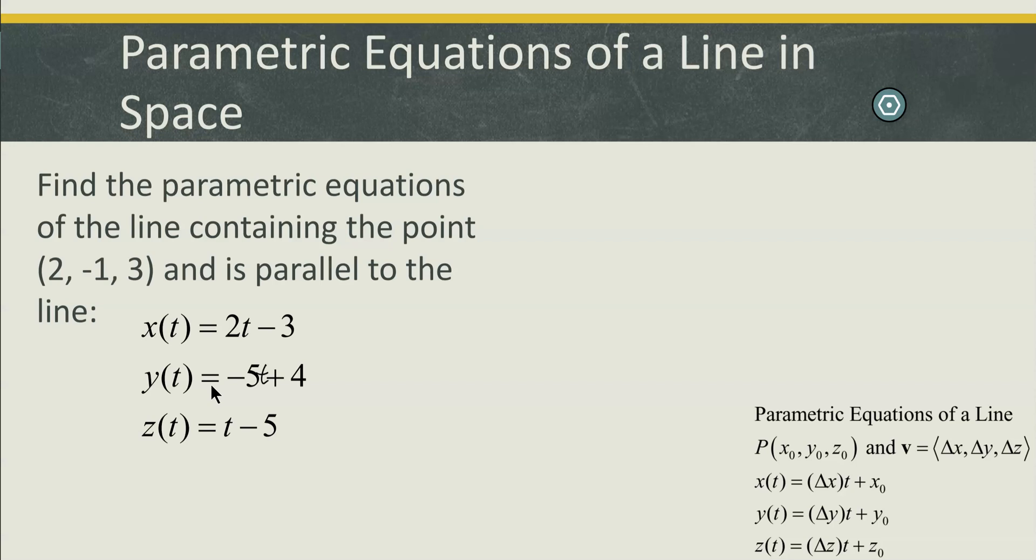So let's remind ourselves about parametric equations of the line. We can see the details in the lower right. To write the parametric equations of a line, you need a point. So in our formula here, our point is x naught, y naught, z naught, and we can see that borne out in these equations.